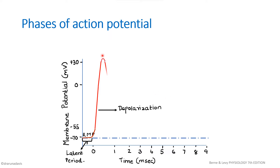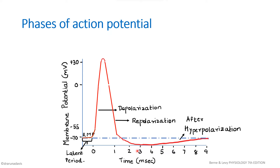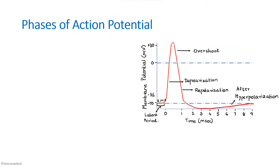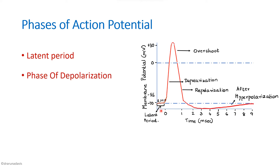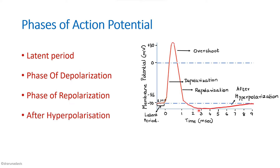Once the potential reaches plus 35 mV, it will start decreasing — that phase is known as the repolarization phase. The potential will continue to decrease even below the resting membrane potential, and that phase is known as after-hyperpolarization. After this, the membrane potential comes back to its resting value. So the phases of action potential are: latent period, depolarization (up to plus 35 mV), repolarization, and after-hyperpolarization.